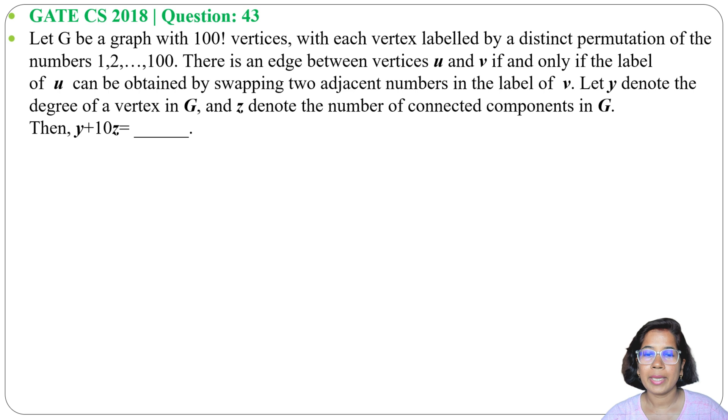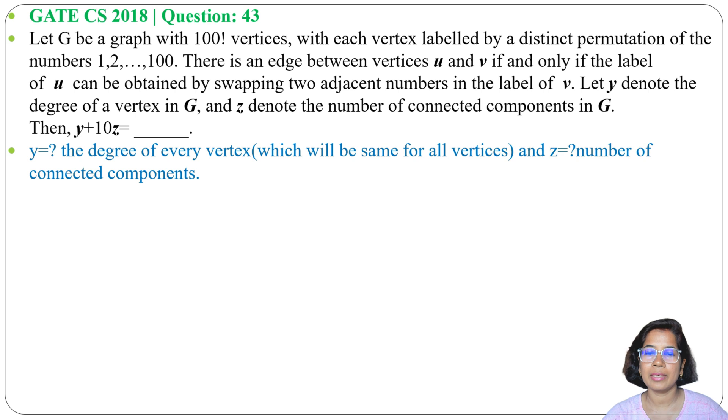First, y is the degree of each vertex which is same for all vertices, and z is the number of connected components. In the question it's given 100 factorial vertices - it's too much. So let me take a small example having 3 factorial vertices.